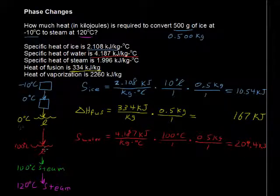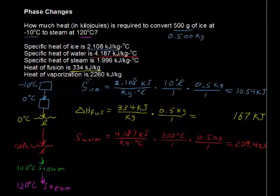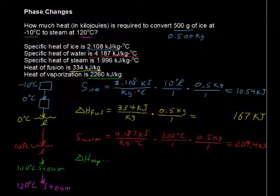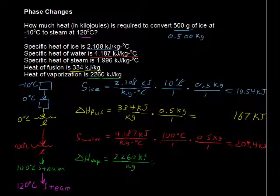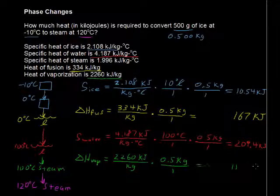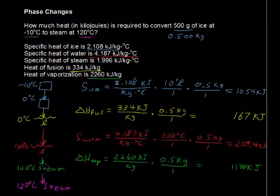Next, we need to convert that liquid at 100 degrees into steam at 100 degrees, and to do that we need the heat of vaporization, denoted delta H sub VAP. That heat of vaporization is 2,260 kilojoules for every one kilogram. We don't have a full kilogram — we have 0.5 kilograms — so it's going to take 1,130 kilojoules to convert the 500 grams of liquid into steam.